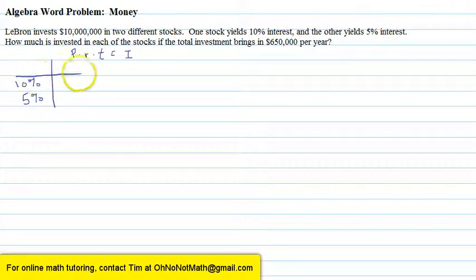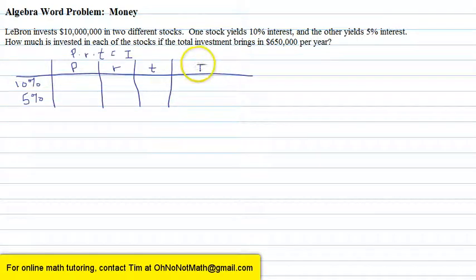We have a table with four columns: a column for the principal P, the interest rate R times T, and interest I. And remember it's P times R times T equals I. So let's see if we can fill in this table.